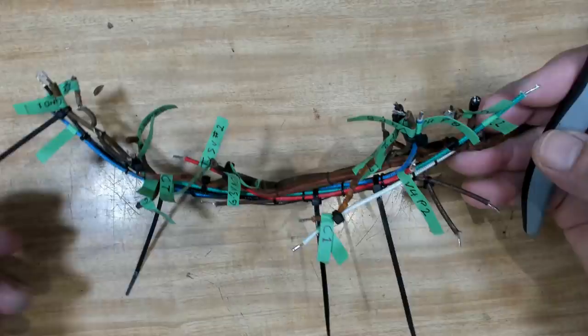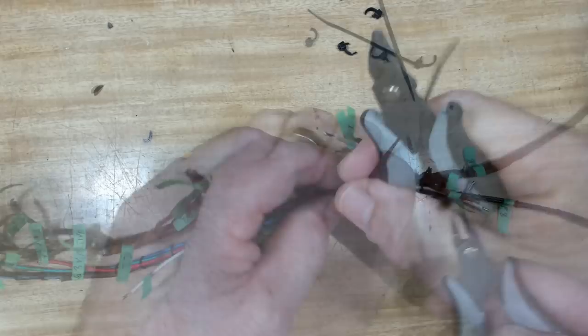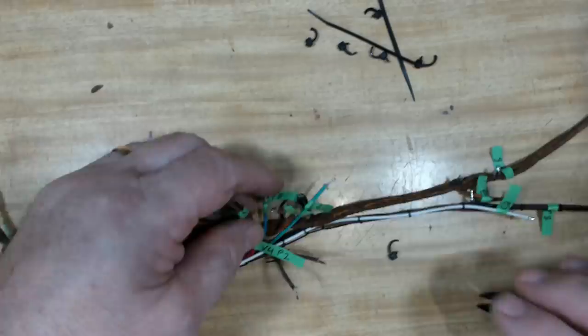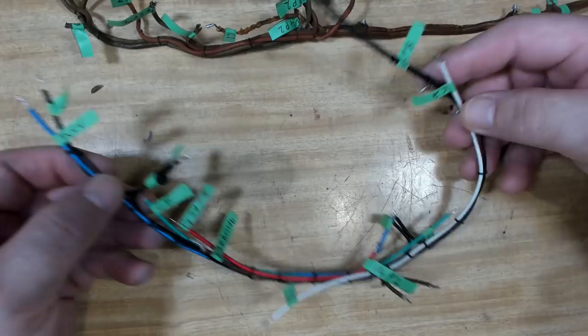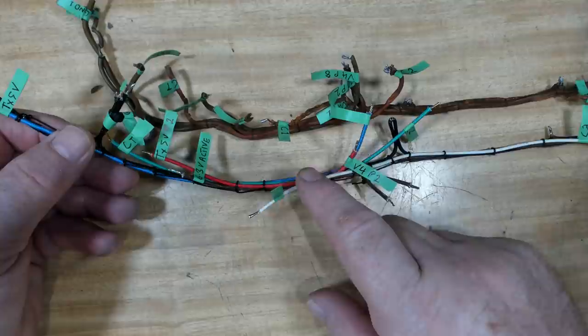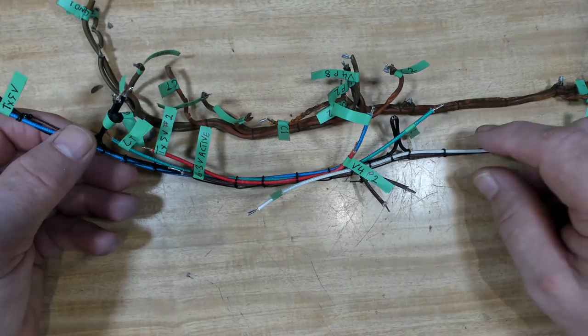I've put tags on everything. I'm going to cut all these tie wraps off. Well, there's my new loom. I hope it fits. I'm going to spend five minutes with my multimeter, buzz all these wires out, make sure they correspond exactly with the old loom. And then I'll put it back in the radio.